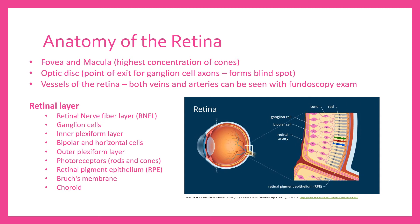Now that we have learned about schizophrenia, let's turn back to the eye. Most of the ophthalmic conditions in schizophrenia occur on the retina, so it is important to understand the anatomy of the retina to understand how the conditions present.